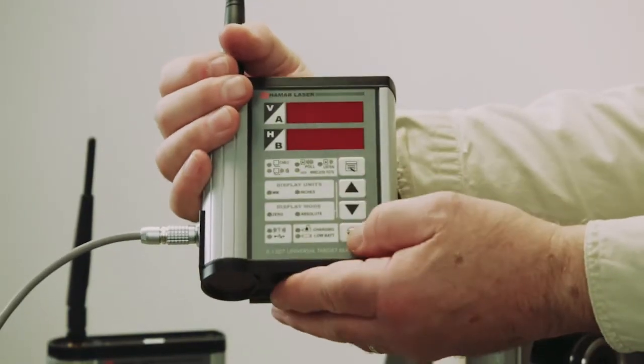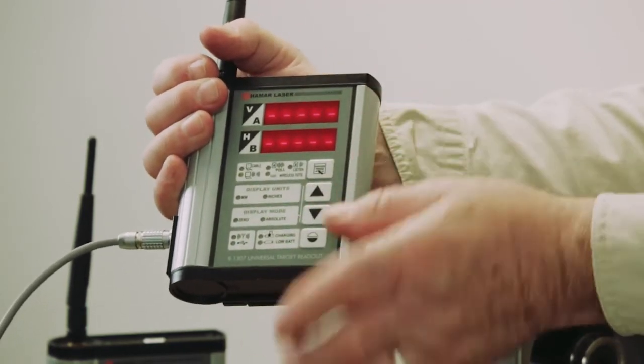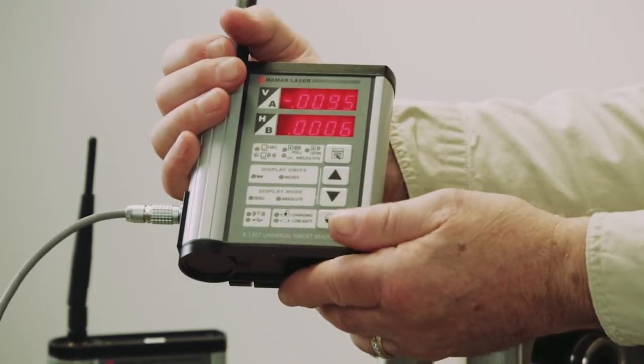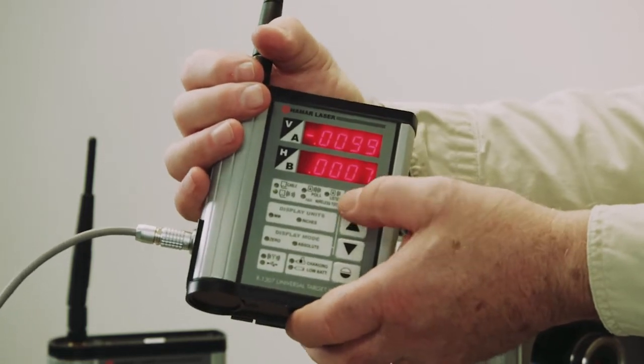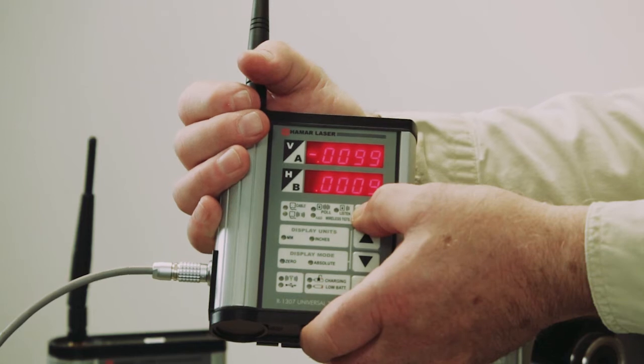So the setup is pretty much the same. The power button's on the bottom, we get the version of the software. The top button is the menu button. Again, press the menu button and hold it.